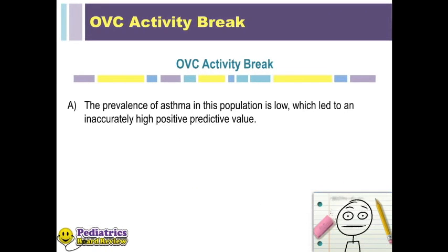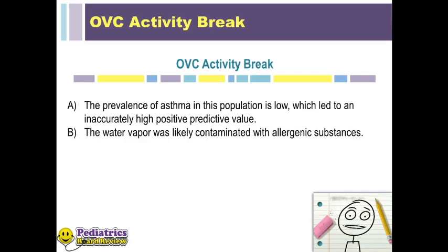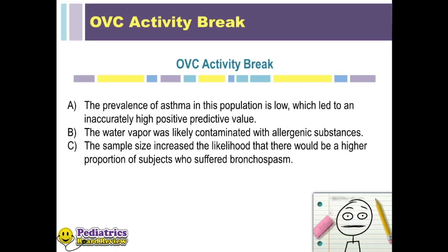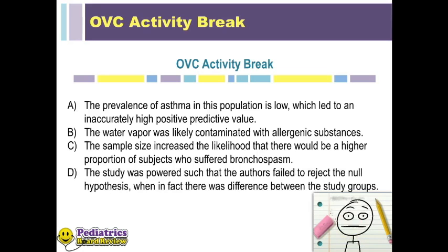A: The prevalence of asthma in this population is low, which led to an inaccurately high positive predictive value. B: The water vapor was likely contaminated with allergenic substances. C: The sample size increased the likelihood that there would be a higher proportion of subjects who suffered bronchospasm. D: The study was powered such that the authors failed to reject the null hypothesis when in fact there was a difference between the study groups.